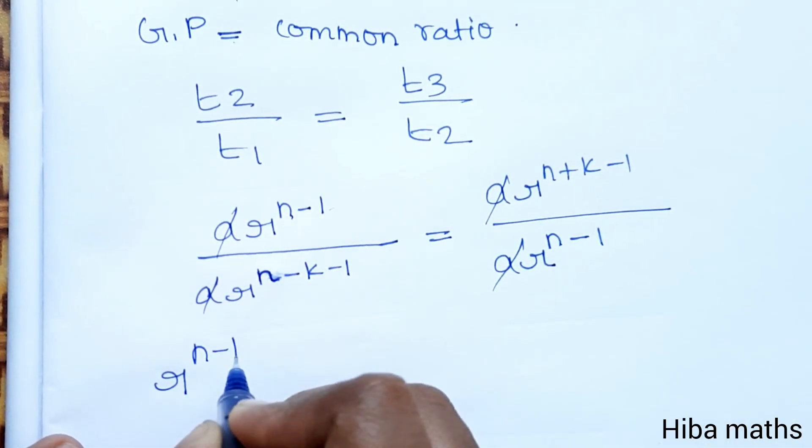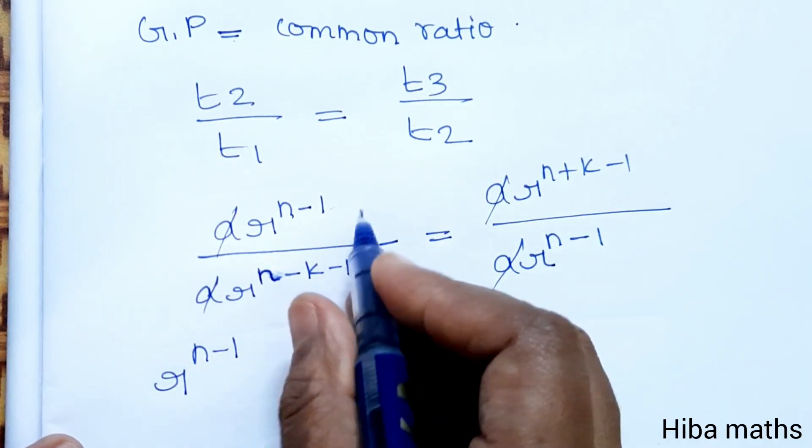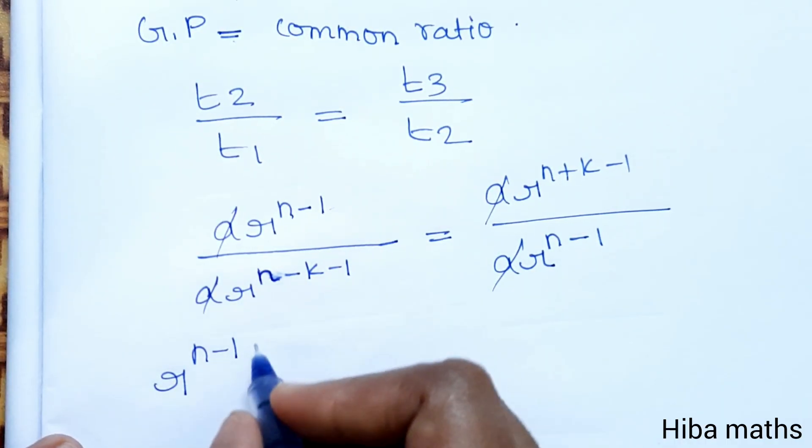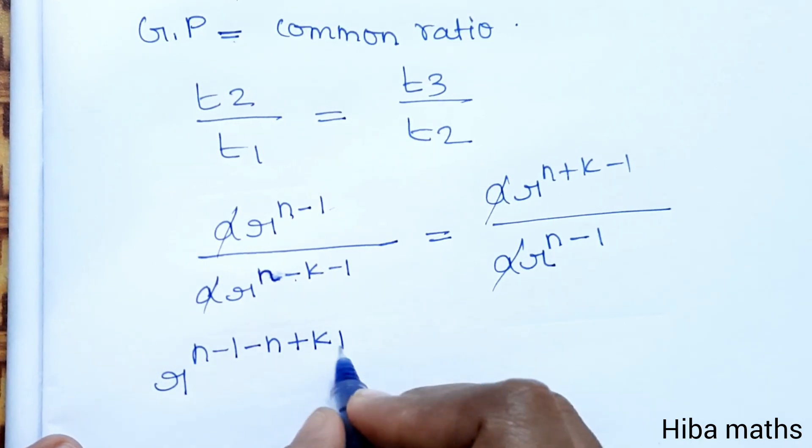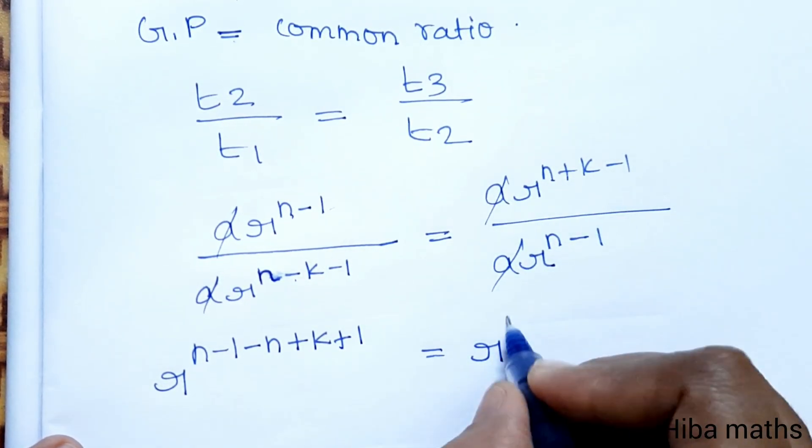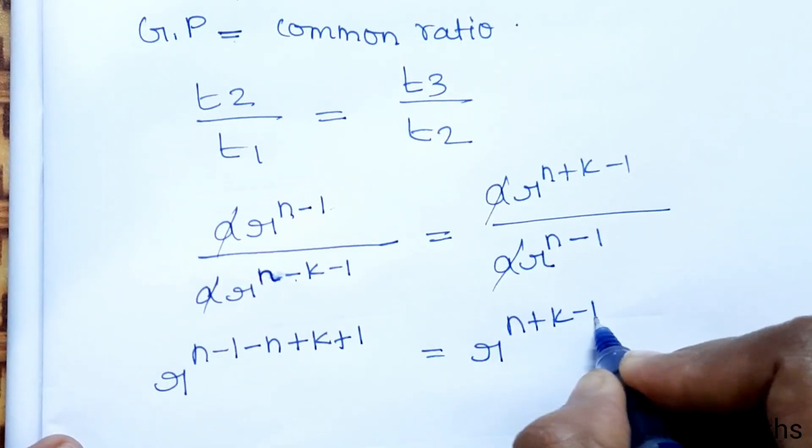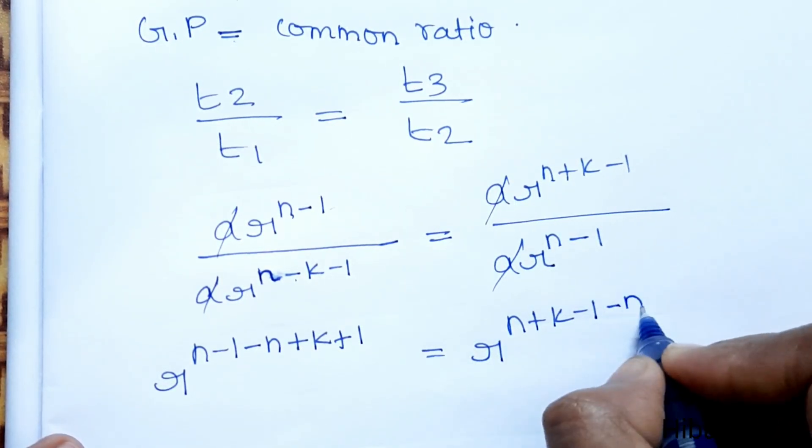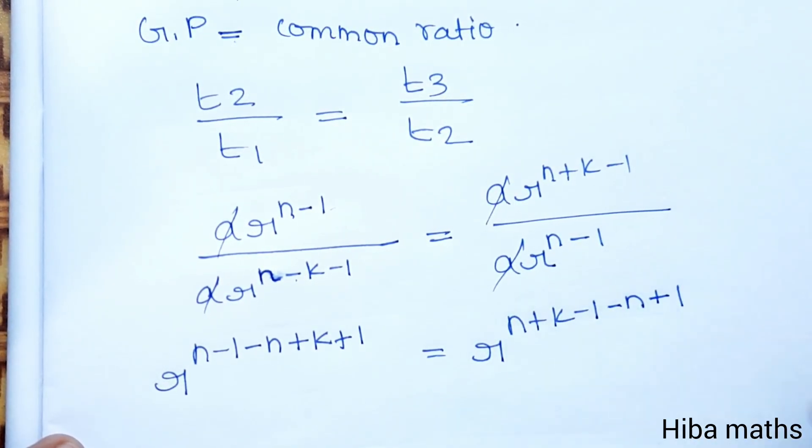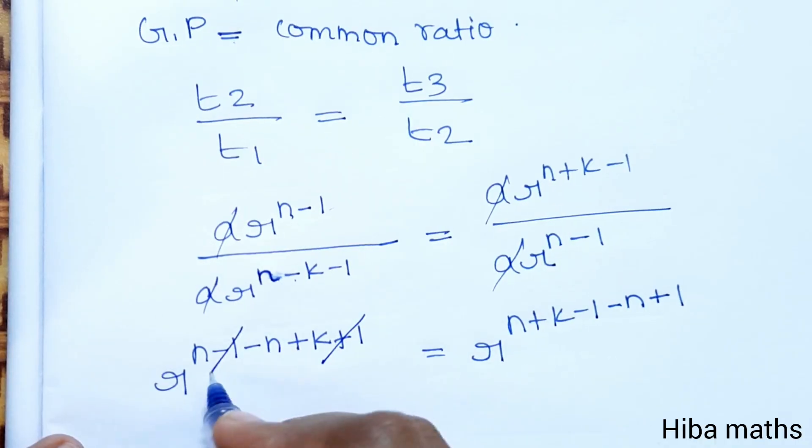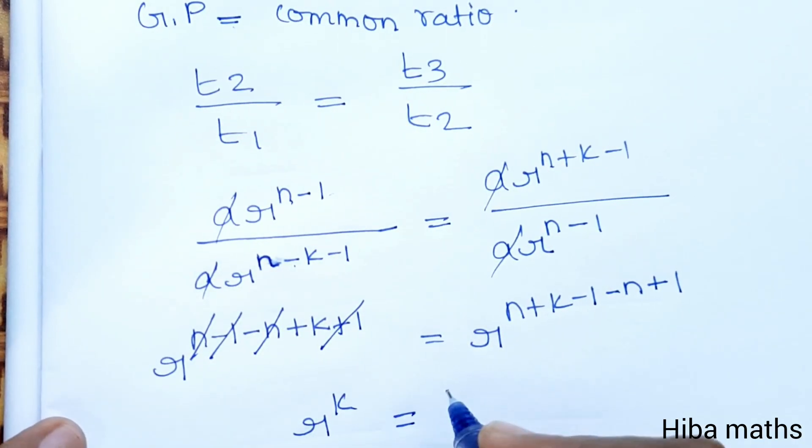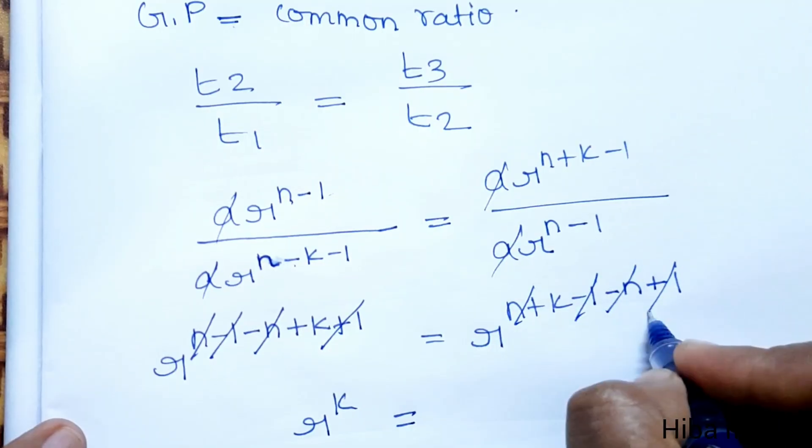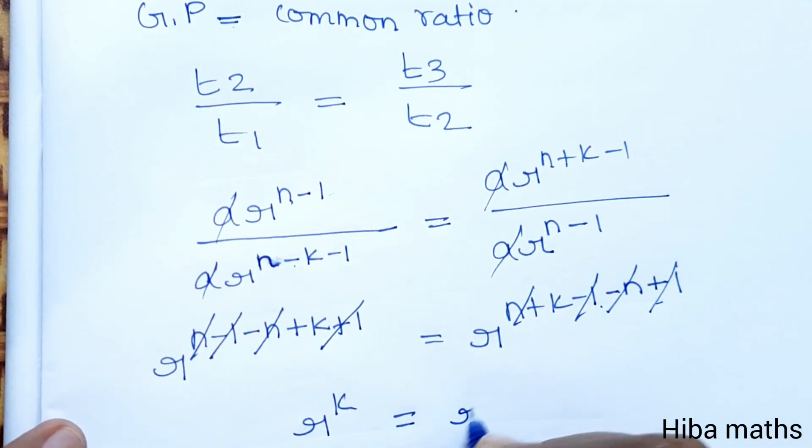Now next step: a cancels. Taking r common, in the denominator the power goes to numerator. n minus n plus k minus 1 plus 1 cancels. That is equal to r^{n+k-1}. Plus n minus n, minus 1 plus 1 cancels, plus n minus n cancels. So r^k equals r^k.